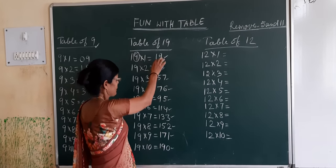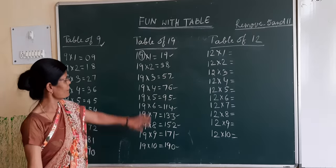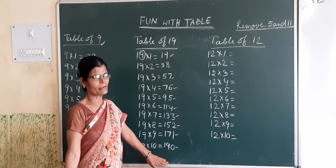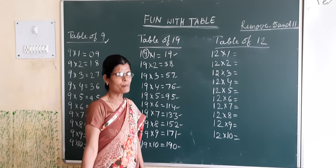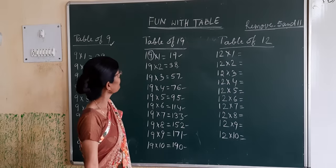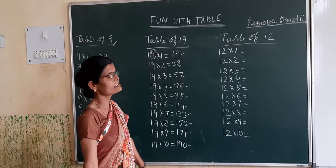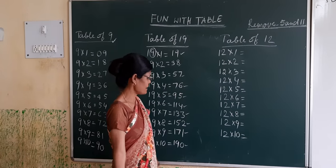This is the table of 19. We should memorize like this, the table of 19. Table of 19 is very difficult to memorize. That's why I am saying please follow this method to learn the table of 19.